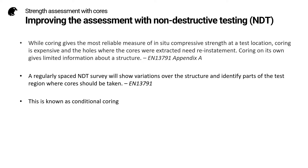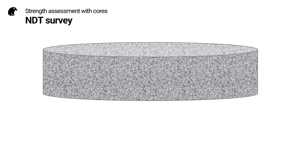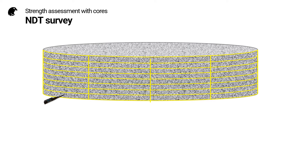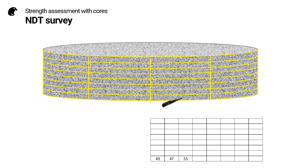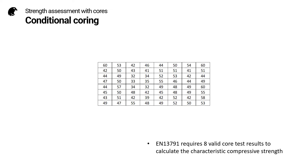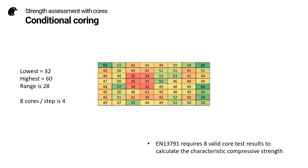A regularly spaced NDT survey will show variations over the structure and identify parts of the test region where cores should be taken — something we call conditional coring. An NDT survey is typically carried out by dividing the test region into a grid, then making an NDT measurement at each cell in the grid. The use of color coding helps to see the variation in the NDT measurements. The first step is to identify the highest and lowest values to calculate the range. If we know how many cores we wish to take — in this case eight — we can calculate the step and use this information to locate the ideal core locations, which will cover the whole range of strength variations in the test region.